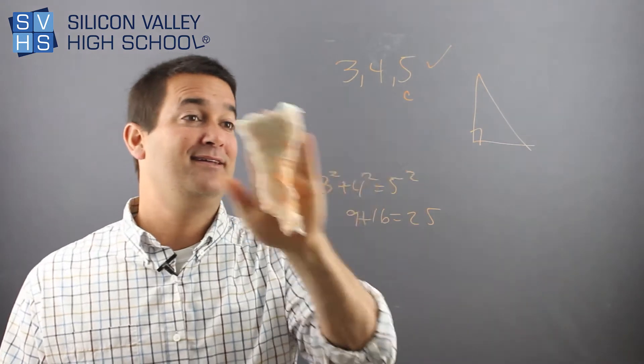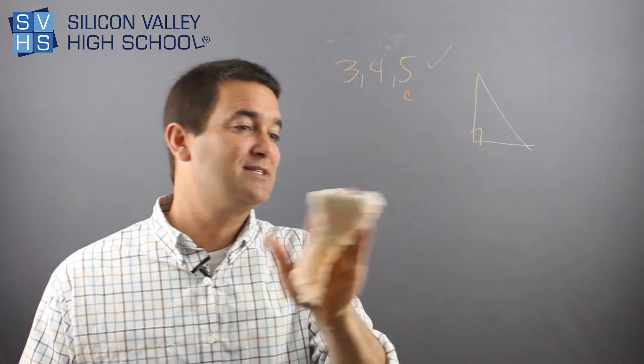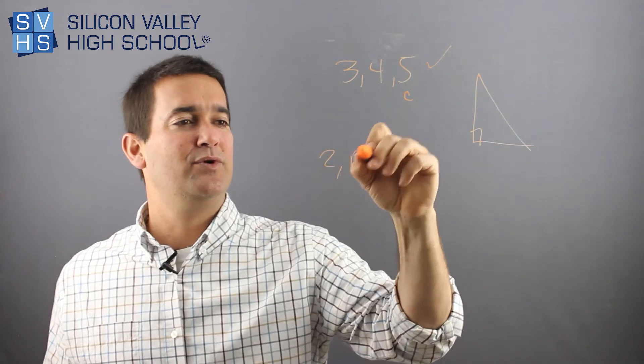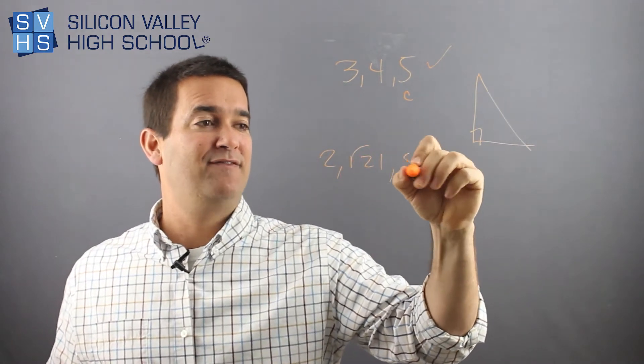I'm going to do one that might, this is going to be more mysterious. This might work. This might not work, right? So what if you had, like, two, root 21, and five?